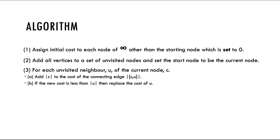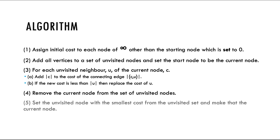Step b, if the new cost is less than the unvisited neighbor, then replace the cost of the unvisited neighbor with the current cost that you have found. Step 4, remove the current node from the set of unvisited nodes. Step 5, set the unvisited node with the smallest cost from the unvisited set and make that the current node. Repeat steps 3 to 5 until we mark the destination node as visited.